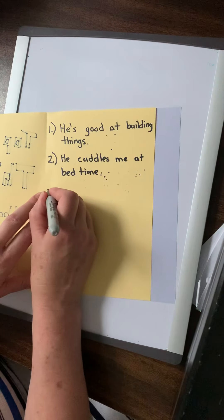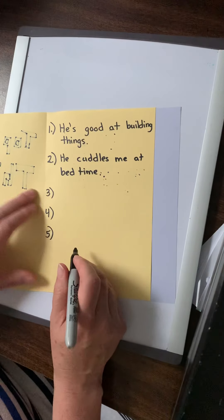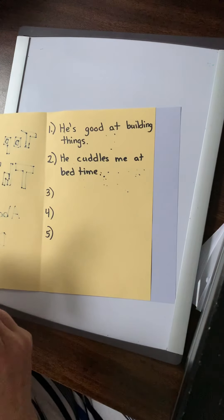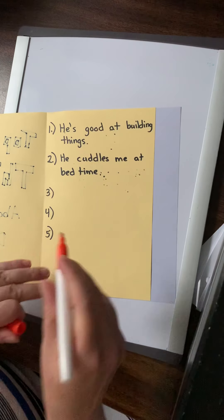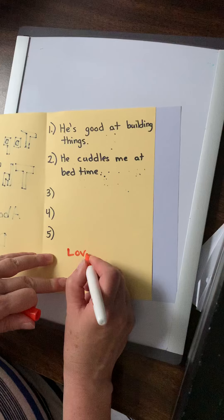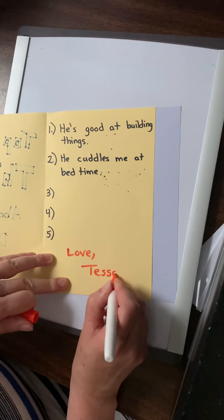All right. And you're going to do number three. You're going to do number four. You're going to do number five. And then you'll sign it. Your name at the bottom. Love whoever you are. Tessa was helping me out so I'm going to say Tessa.